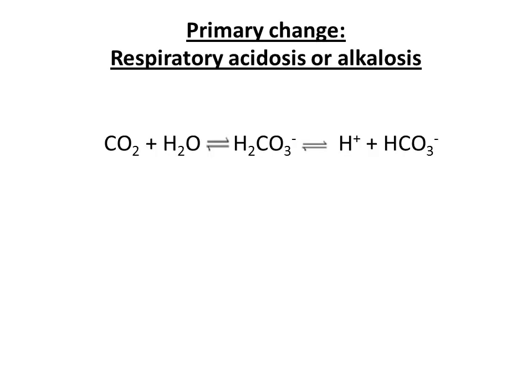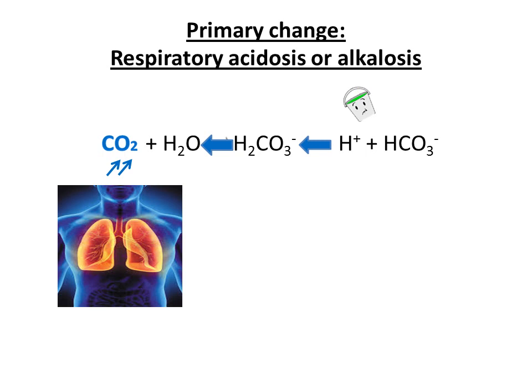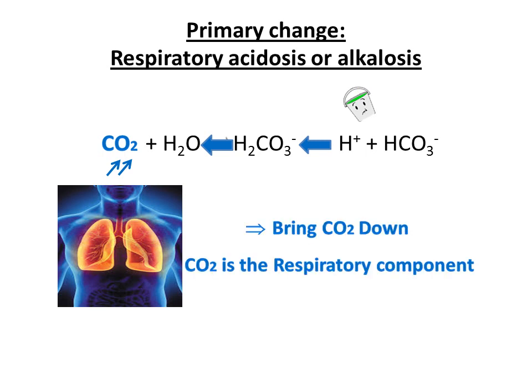If we add acid to our body, the equation will shift to the left, which increases the concentration of CO2. Fortunately, our lungs will work harder to get rid of this via hyperventilation, which brings down CO2. So CO2 is the respiratory component. The lungs are known for being a fast-responding system for the compensation of acid-base disturbances.